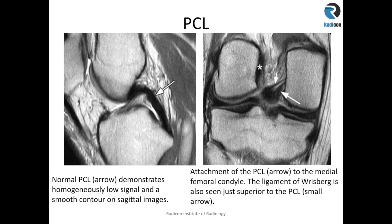Here is an example of what a normal PCL looks like — the posterior cruciate ligament — which is a homogeneously low-signal and smooth contour structure. It attaches to the medial femoral condyle, and we can see the ligament of Riesberg just superior to the PCL, demonstrated by this small arrow. The star indicates the origin of the ACL at the lateral femoral condyle.